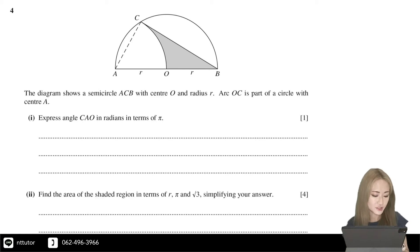Part 1: Express angle CAO in radians in terms of π. So angle CAO is the angle over here.